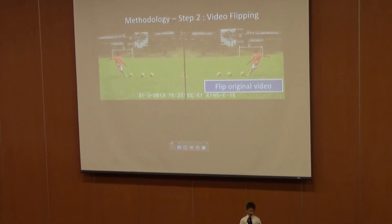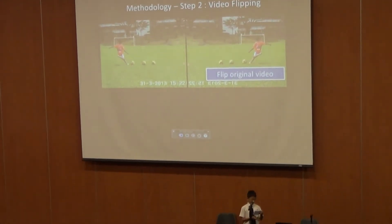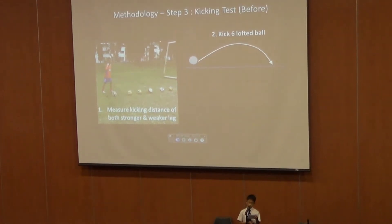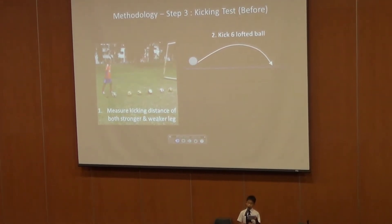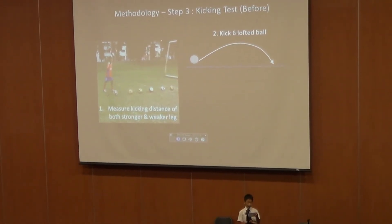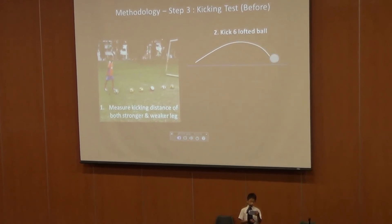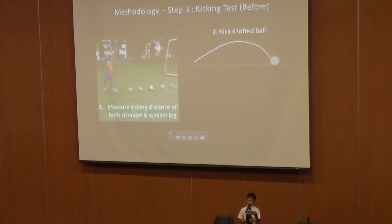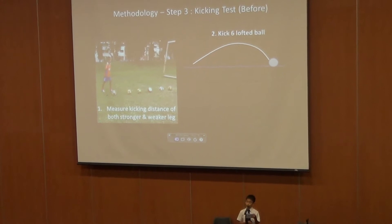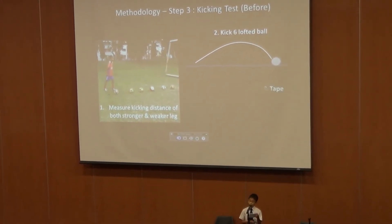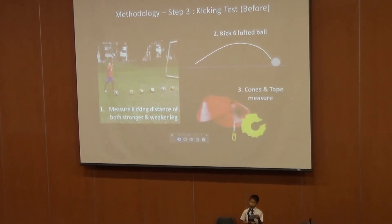For the next step, I got the subjects to kick six slotted balls with their weaker and stronger legs six times each. I will then place a cone right after the subject's ball landed on the ground, and measure the distance with a 50-meter measuring tape.